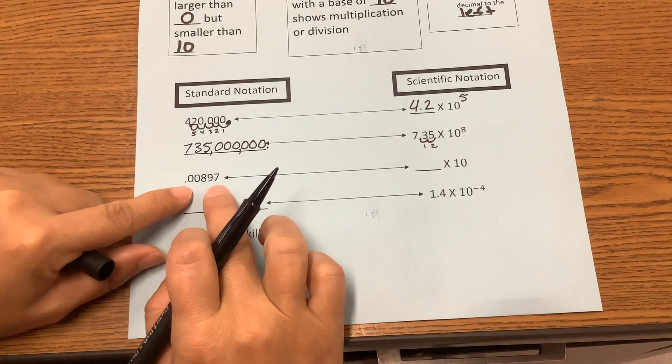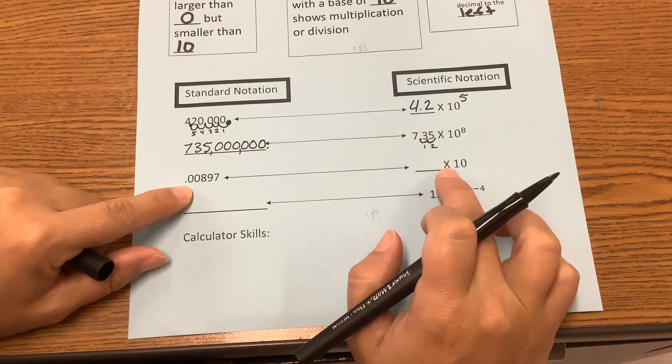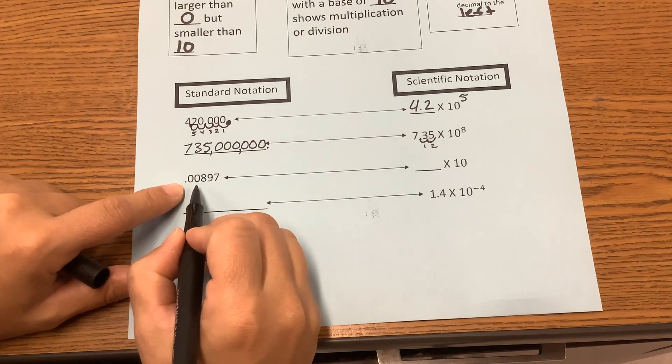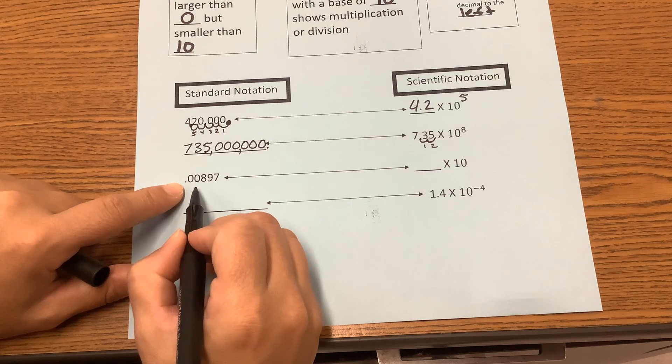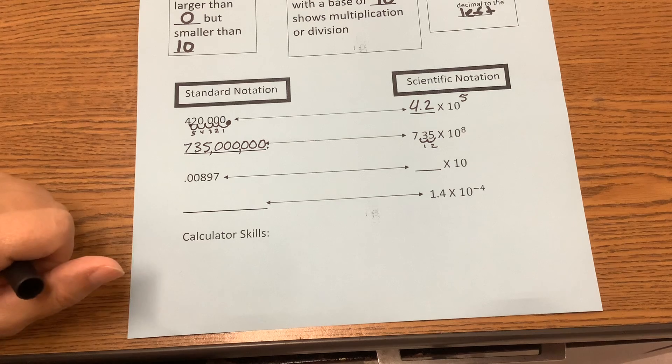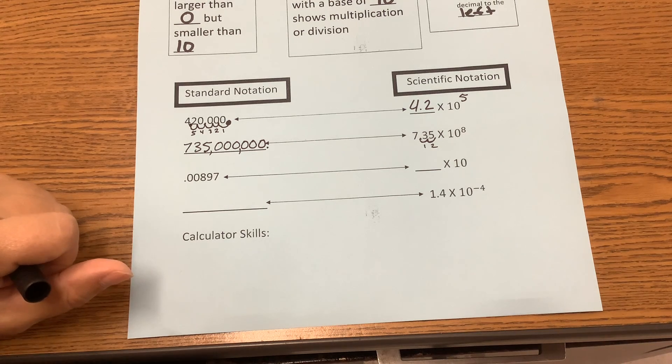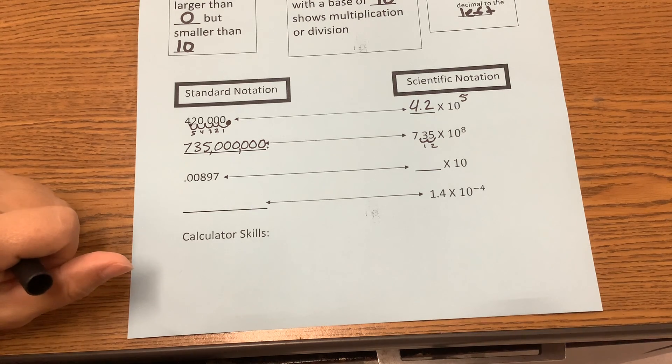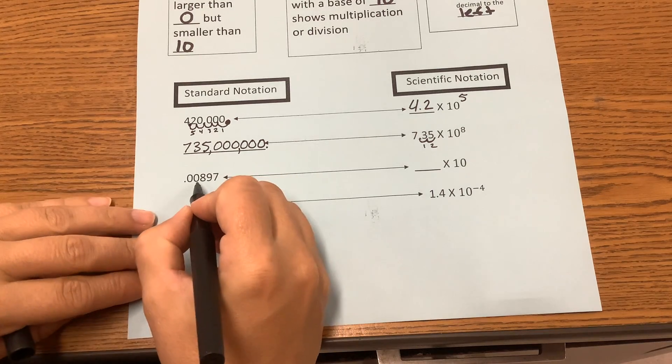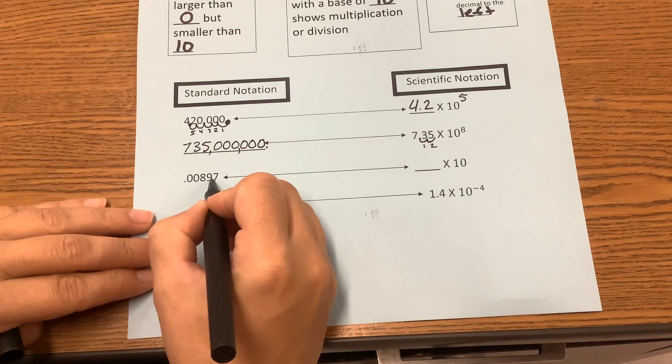Okay, so now we have another one where we're going from standard notation to scientific notation. Now we're going to have to move this decimal so that the number is between 1 and 10. So where do I need to move my decimal? Do I put it between the 0 and 8, the 8 and 9, or the 9 and 7?